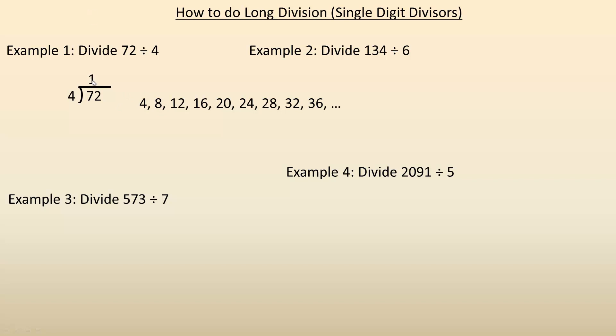We'll put a 1 up here and we multiply the 1 by the 4 and put 4 here. And then we subtract the 7 and the 4. So 7 minus 4. In a long division, we're always subtracting. That's why you don't have to write that subtraction symbol. 7 minus 4 is 3, and then we bring this 2 down.